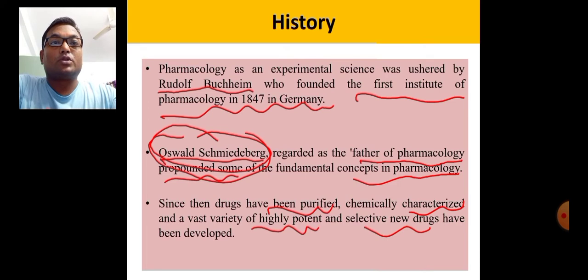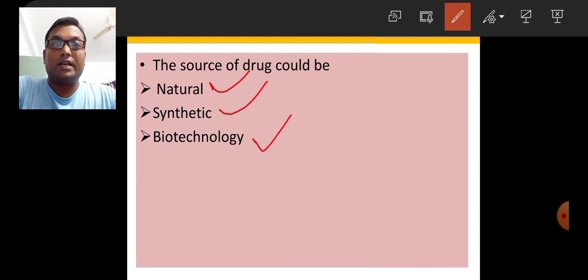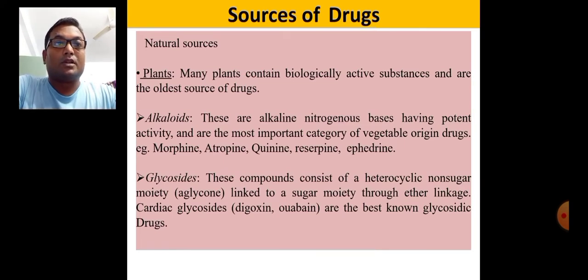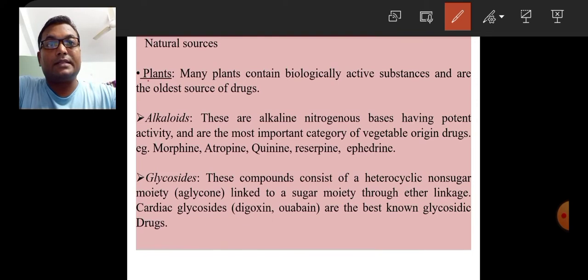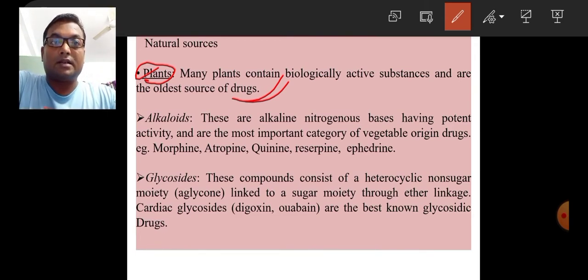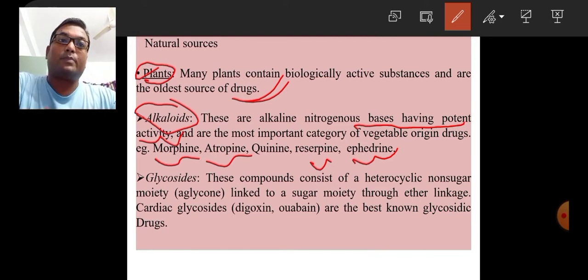Sources of drugs can be natural, synthetic, and biotechnology. In natural sources, drugs can be synthesized from plants. Many plants contain biologically active substances and are the oldest sources of drugs. Another natural source is alkaloids — naturally active compounds that are alkaline nitrogenous bases with potent activity, like atropine, morphine, quinine, reserpine, and ephedrine. These are active compounds derived from particular plants.